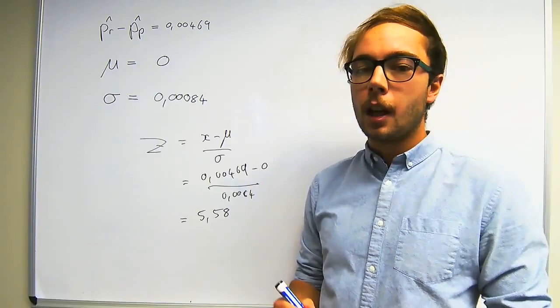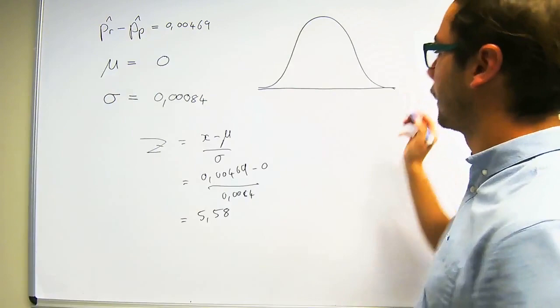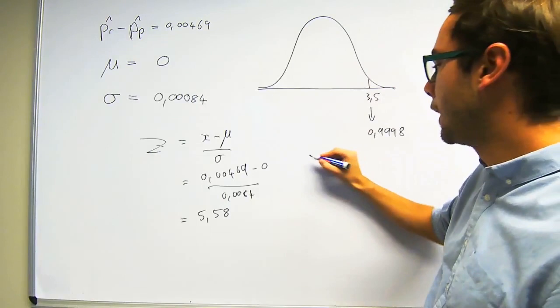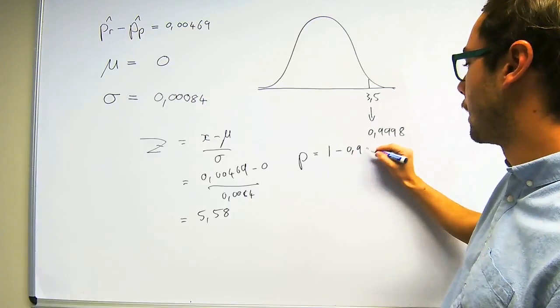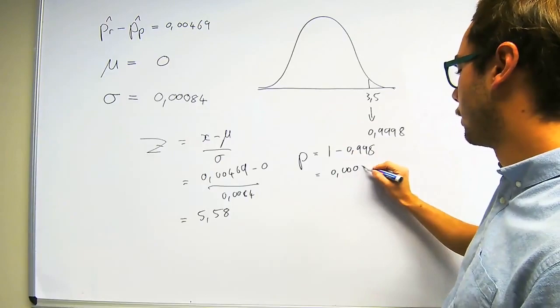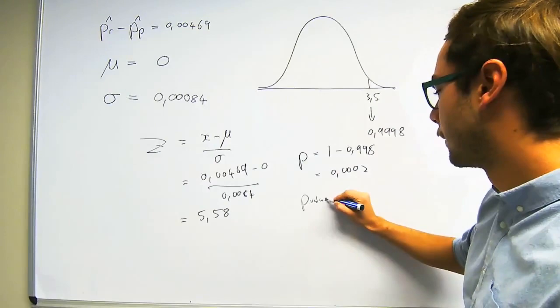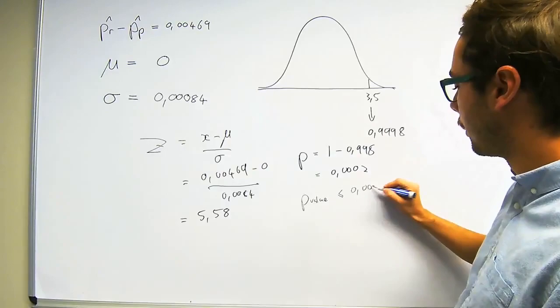If we draw the distribution, the largest z-value in the z-table is 3.5, associated with a probability of 0.9998. Our p-value is therefore equal to 1 minus 0.9998, which is 0.0002. However, because this is a two-sided hypothesis test, we need to multiply that by 2. So our p-value is less than or equal to 0.0004.